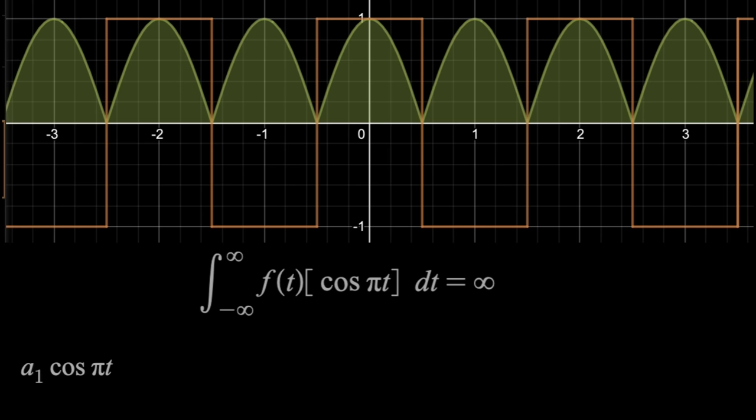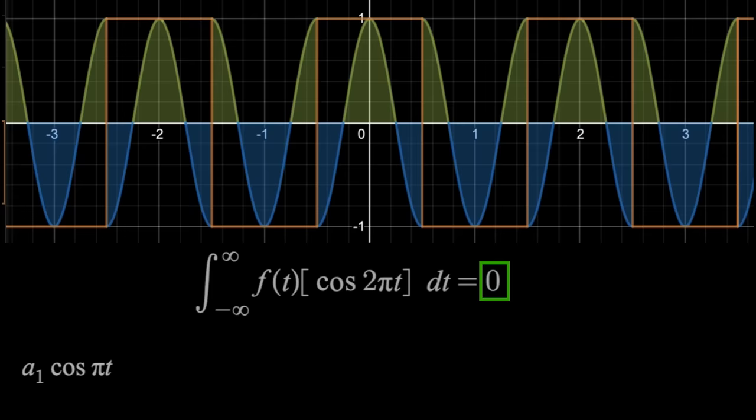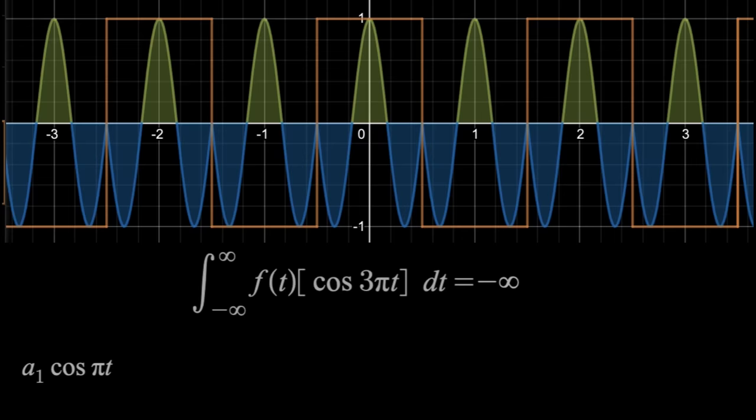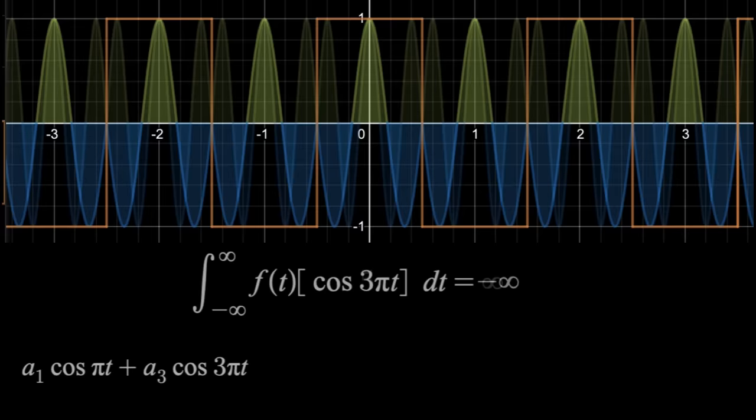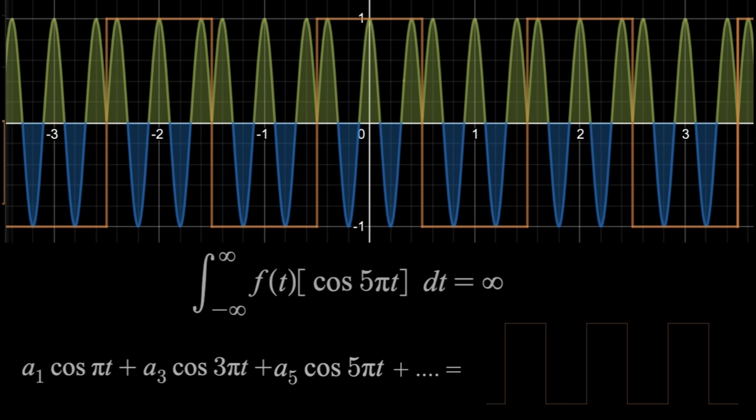However, this isn't the only sinusoid in our function. We have to keep going. Now I'm going to skip around, so if we jump to omega equals two pi, then the area will be zero. If you look closely, the blue and green regions do cancel out. But when we go to three pi, there's a continuous pattern of more blue than green. So we get negative infinite area, meaning there's a cosine three pi t also making up our function, but that coefficient will be negative for the negative area. As I keep going, it turns out only the odd integers times pi give us an infinite area, meaning that our square wave can be created by summing infinitely many cosine curves together with this pattern, which is the basic idea behind the Fourier series.